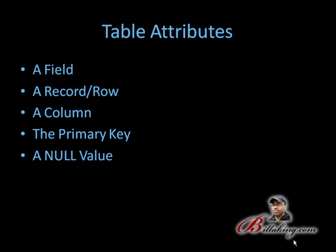A record is also called a row and is the horizontal entry within your database. When you look at a database, a record is the row that goes across — it's horizontal. A column is what goes down; it's the vertical entity within a table. A field is the individual piece within the table. So a row or record is what goes horizontal, and a column is what goes down.